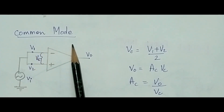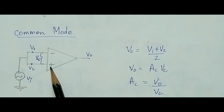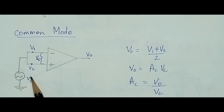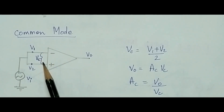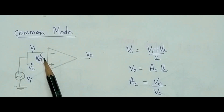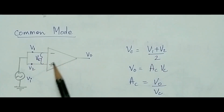The next mode of operation is the common mode. When both inputs are the same, the op-amp operates in common mode and its output amplifies the average of the two inputs. The same input voltage goes to both the inverting and non-inverting terminals. The average input is denoted by Vc — where Vc equals V1 plus V2 divided by 2.